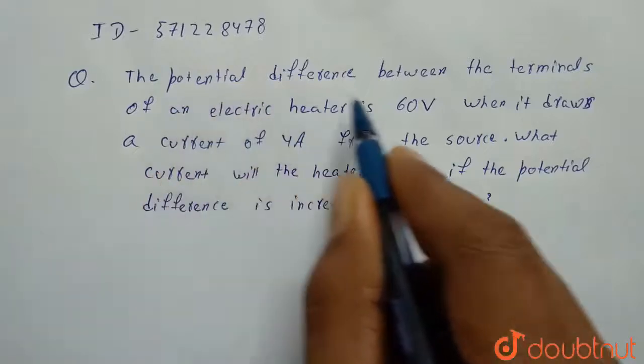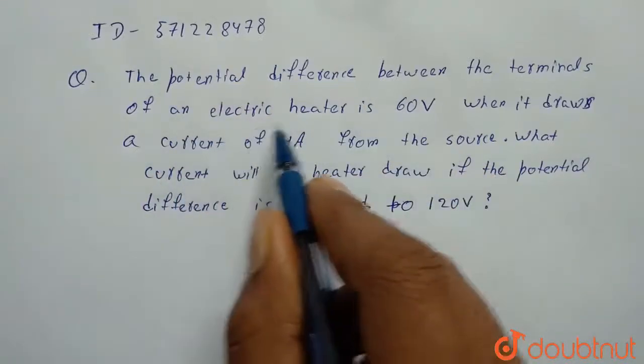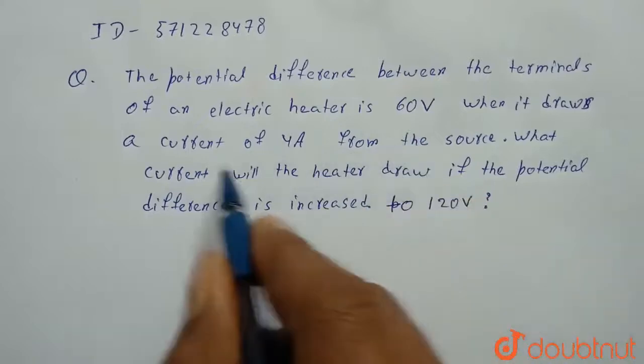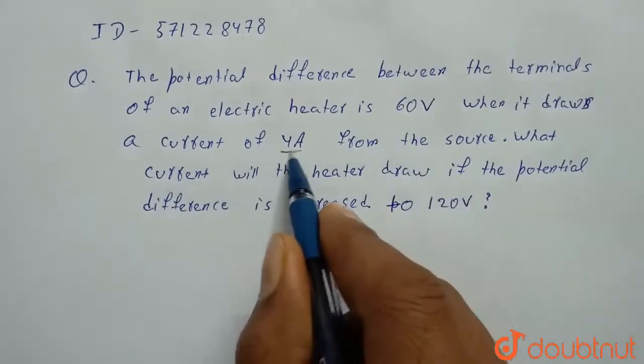The potential difference between the terminals of an electric heater is 60 volts when it draws a current of 4 amperes from the source.